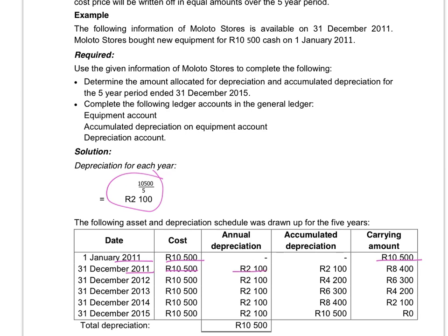So the depreciation expense that will be recorded in the profit and loss account will be $2,100, and the accumulated depreciation account will be credited with $2,100. So at the end of the year the asset is not worth $10,500 anymore. Because we depreciated it, the carrying amount — what it is worth on that date — is $10,500 minus $2,100, which gives you $8,400.